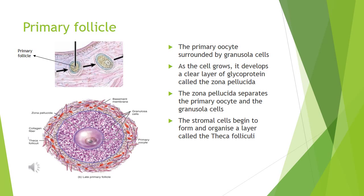The primary follicle is a primary oocyte surrounded by granulosa cells. As it grows, a clear membrane made up of glycoprotein, called the zona pellucida, separates the primary oocyte and the granulosa cells. The stromal cells connected to the basement membrane begin to form and organise a layer called the theca folliculi.